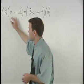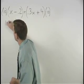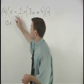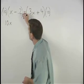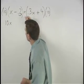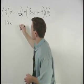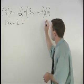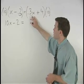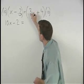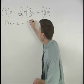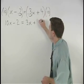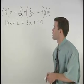So we have 10 times x, or 10x. And when multiplying 10 times negative 0.2, we move the decimal one place to the right, so we have minus 2. Next we have 10 times 0.3x. So we move the decimal one place to the right, and we have 3x plus 10 times 4, or 40.